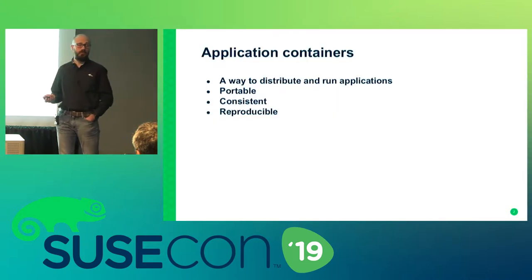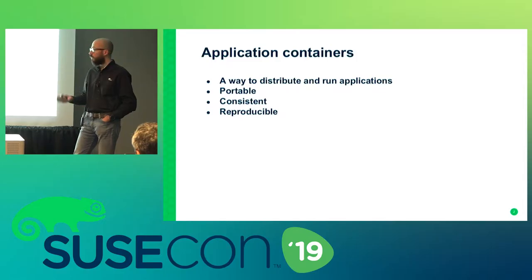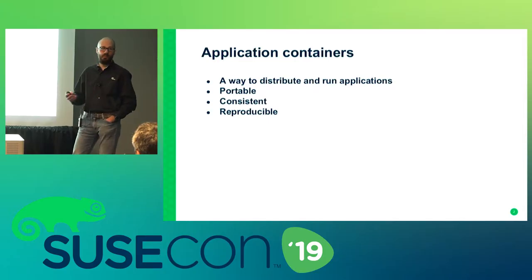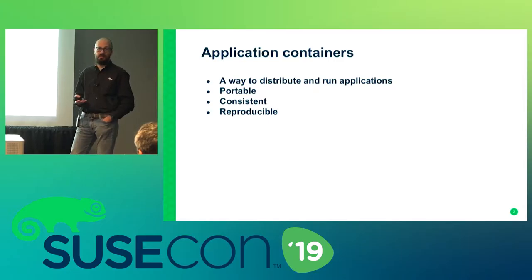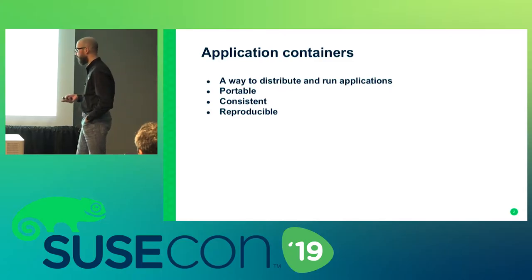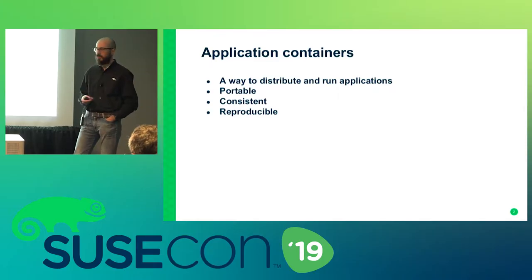Kata Containers is just a different way to run the usual Linux containers you are already used to. We are going to talk about application containers today. Application containers define a new way to deploy applications — you take your application, package it into a container, and you have something that is portable, that can be moved across different environments, different architectures, different platforms, and run in a consistent way.